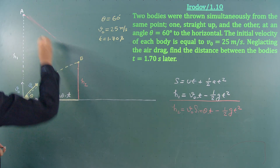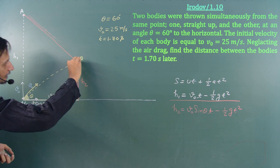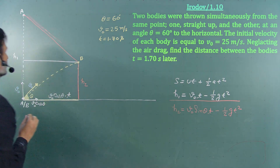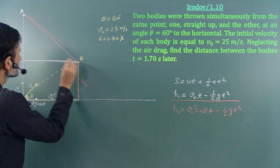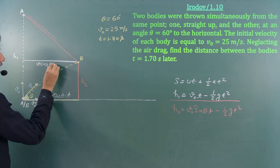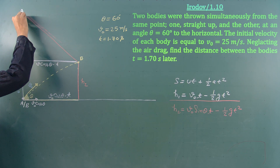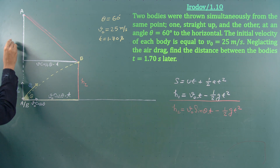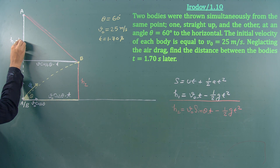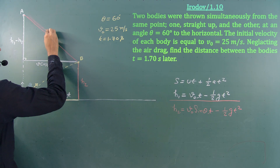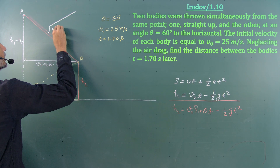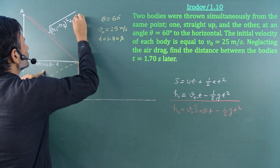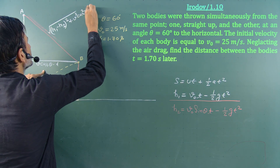Now I know h1, h2, and the horizontal distance, and I need to calculate the straight-line distance between the two particles. Drawing a right triangle: the horizontal side is v₀cosθ·t, h1 is the full vertical rise of particle A, h2 is the vertical rise of particle B, so the vertical side of the triangle is h1 minus h2. Since the angle is 90 degrees, the distance is √[(h1−h2)² + (v₀cosθ·t)²].